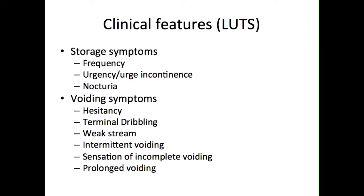The clinical features of BPH, also known as lower urinary tract symptoms, can be divided into those due to storage issues and those due to voiding issues. Storage-related symptoms are frequency, urgency and nocturia. Voiding-related symptoms include intermittent flow, weak stream, hesitancy, terminal dribbling and straining to initiate micturition.